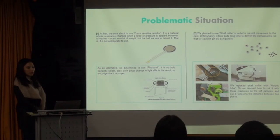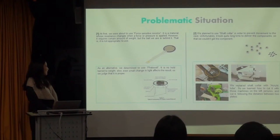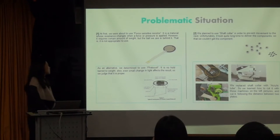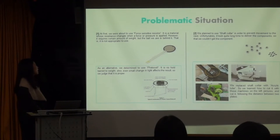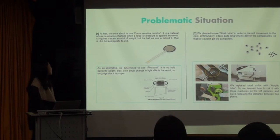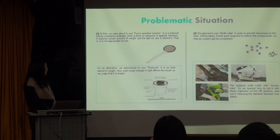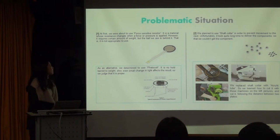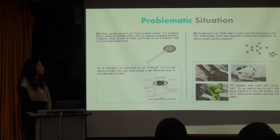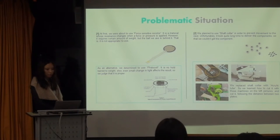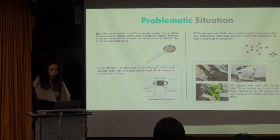This is our problematic situation. There are a lot of problems; these are representative ones. First, we were about to use a force-sensitive resistor — a material whose resistance changes when force or pressure is applied. However, it requires a certain amount of weight, but the ball we use is too light. So it was not appropriate to use, and as an alternative, we determined to use a photocell. Second, we planned to use sharp color to prevent movement to the next part. Unfortunately, it took quite a long time to deliver the component, so we couldn't get it. We replaced the sharp color with an approximate alternative, learning how to cut it with machines and cut it following the distance between two plates.